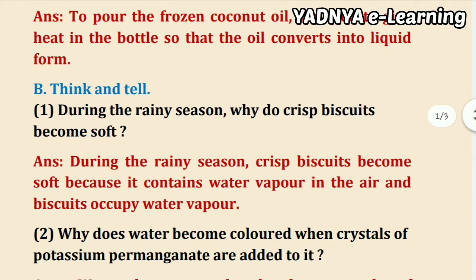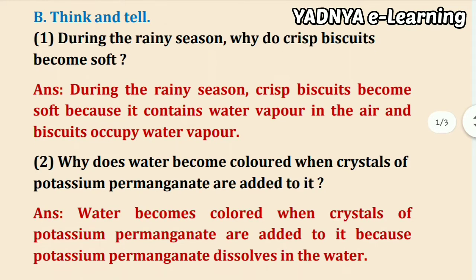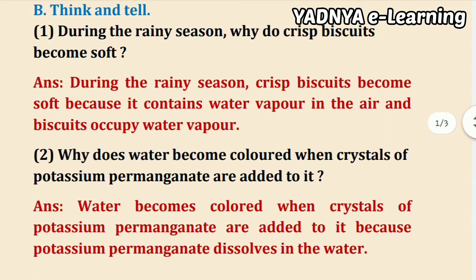Next question — Think and Tell: During the rainy season, why do crisp biscuits become soft? The answer is: during the rainy season, crisp biscuits become soft because the air contains water vapor, and the biscuits absorb that water vapor.